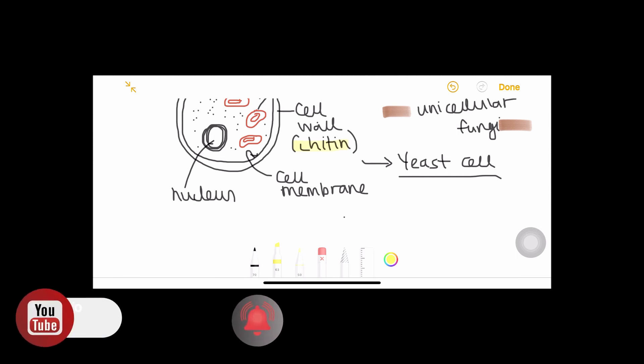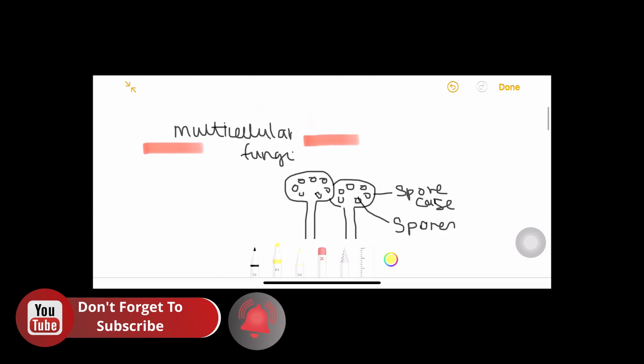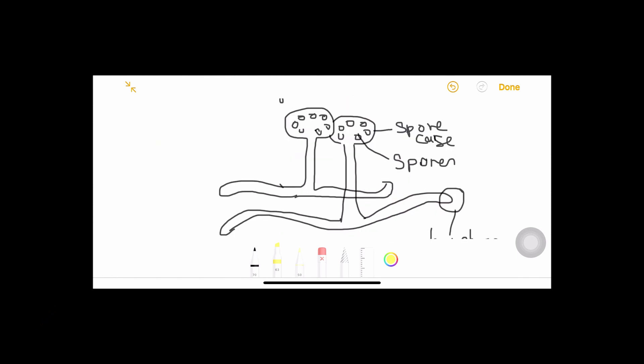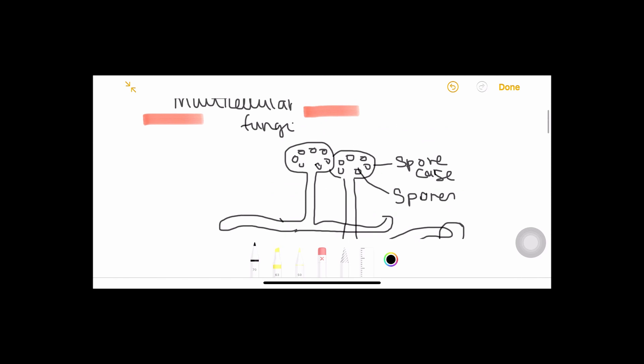But apart from unicellular fungi, fungi can also be multicellular. Apologies for the ugly diagram, but I tried my best. The multicellular fungi, for example, are the mushrooms, the toadstools. If you want, you can note down these examples.